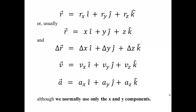The basic idea is that you can write one symbol, like r vector, or delta r vector, or v vector, or a vector, and that that one symbol represents a large amount of information, the individual components that make up that particular vector, the x, y, and z components, as you see here.